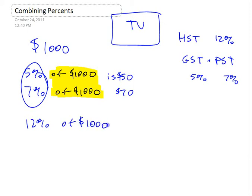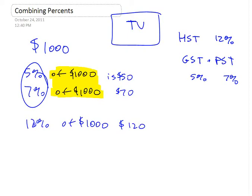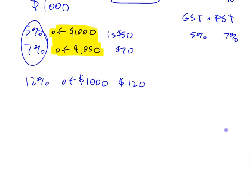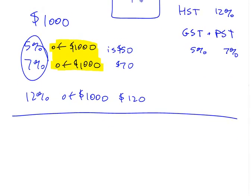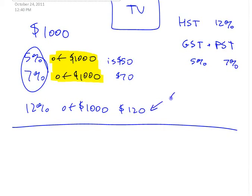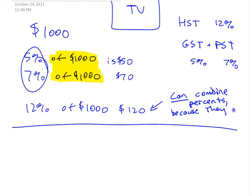What is 12% of $1,000? It's $120. Since these are percentages of the same thing, you can lump the two percentages together. So in that case, you can combine the percentages — because they're percentages of the same number.